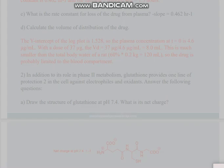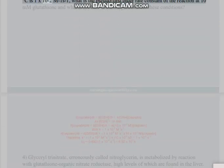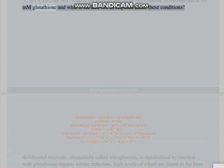Part B: If the second-order rate constant for the reaction of glutathione with cisplatin at 37°C is 1×10⁻² M⁻¹s⁻¹, what is the pseudo-first-order rate constant of the reaction at 10 mM glutathione, and what is the half-life of cisplatin under these conditions?